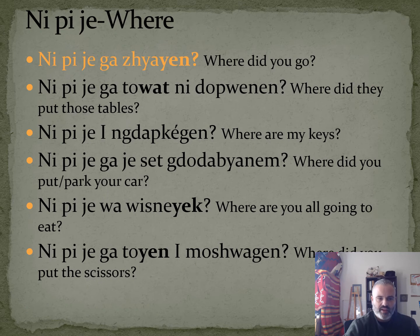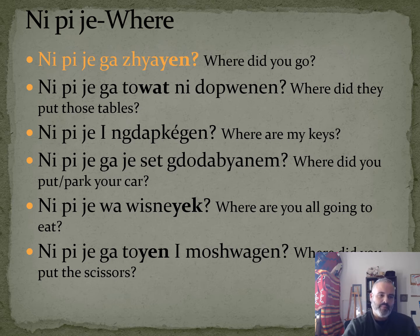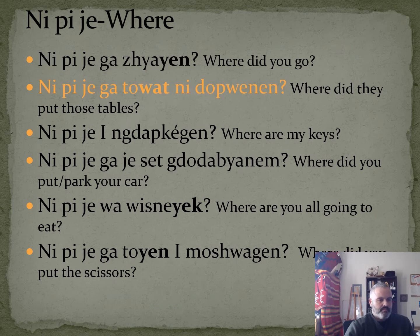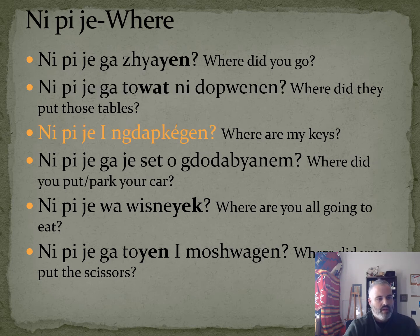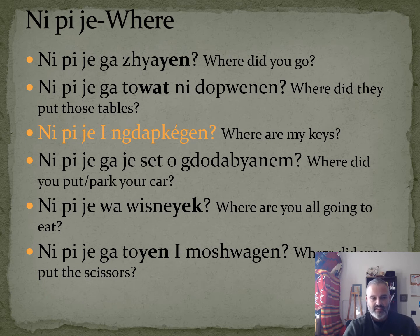Ni pija gazia yan means 'where did you go?' Ni pija is the 'where,' zia is the verb 'to go,' yin is 'you,' and ga is the past tense. Ni pija e nagadap kegan means 'where are my keys?' — ni pija is 'where,' e is 'that thing,' na being 'mine,' godop kegan means 'keys.'